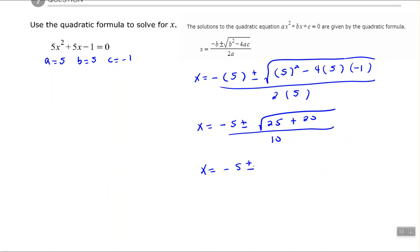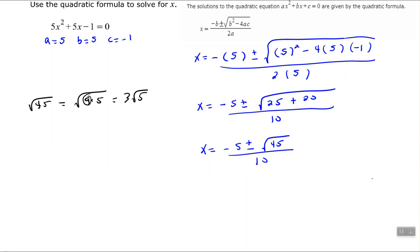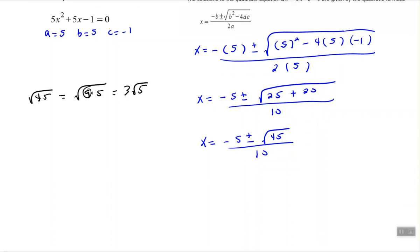So -5 plus or minus the square root of 45 all over 10. Now 45 can be simplified because the square root of 45 is the same thing as the square root of 9 times 5. And we can simplify the square root of 9 to make it 3 times the square root of 5.